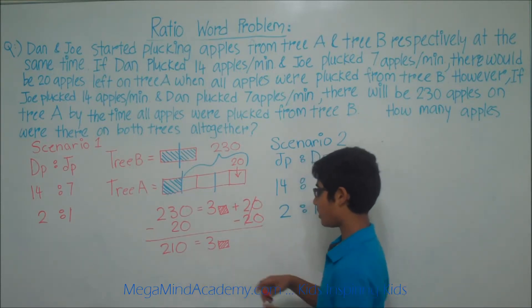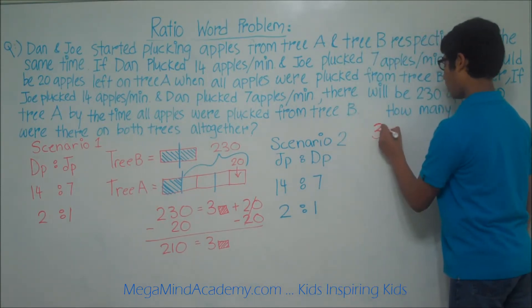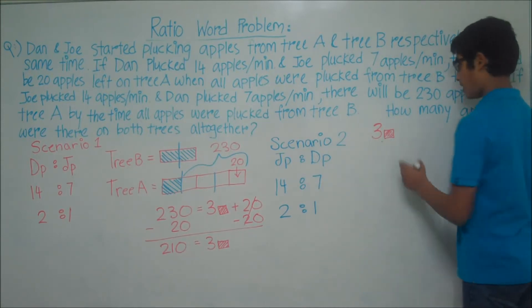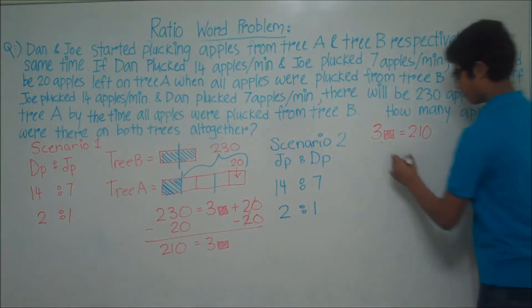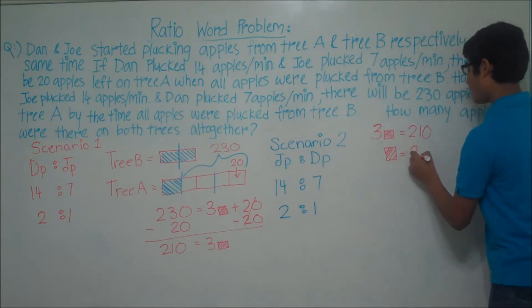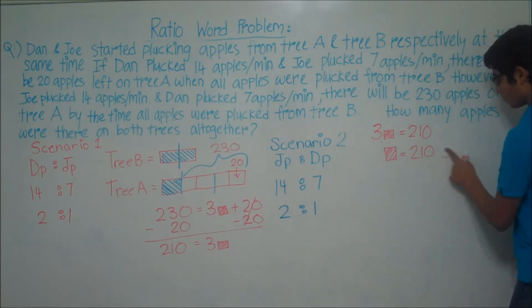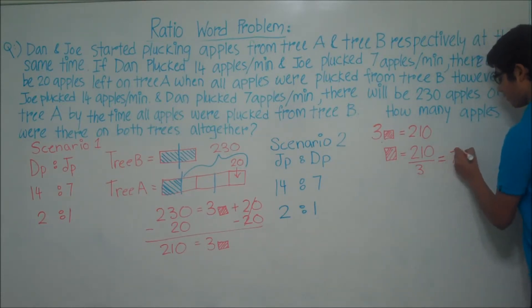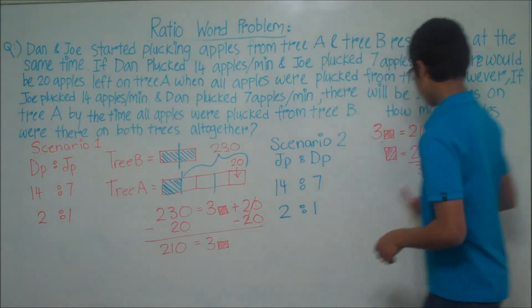So we get 3 boxes is equal to 210. This means that one box is equal to 210 divided by 3, which equals 70. So one box is equal to 70 apples.